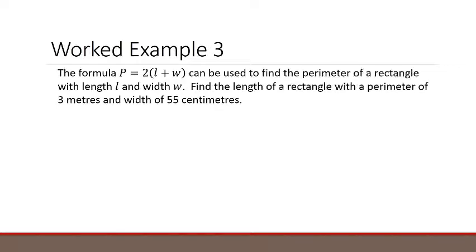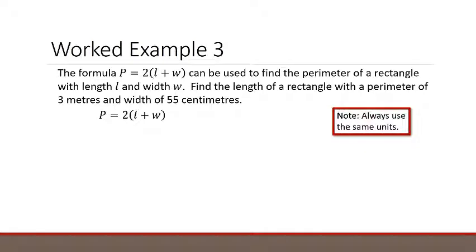For worked example 3, the formula P = 2(l+w) can be used to find the perimeter of a rectangle with length l and width w. Find the length of a rectangle with a perimeter of 3 metres and width of 55 centimetres. Again, write down the formula so we can keep equal signs one under the other: P = 2(l+w). Always use the same units. You'll notice in the question that the perimeter is 3 metres, the width is 55 centimetres. We want to convert one of those so it has the same units. 3 metres is the same as 300 centimetres, so we'll substitute 300. So 300 = 2(l+55).